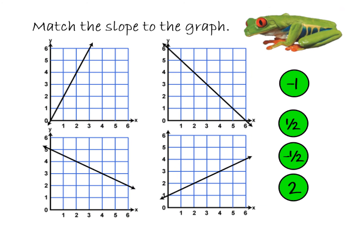Now we're going to look at slopes here. I have four possible answers on the right. Starting in the upper left, I see two good points — that's a rise of two and a run of one, which means my slope is two. Over in the upper right, here's a good point and here's a good point. This time I went down one to the right one. Because we went down, that's a negative one over one, or negative one. So my slope is negative one.